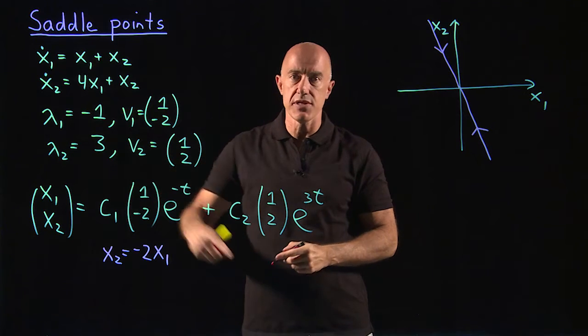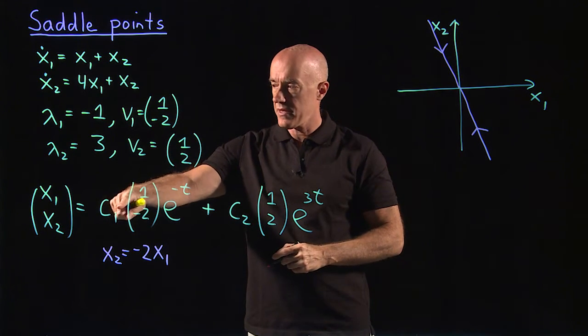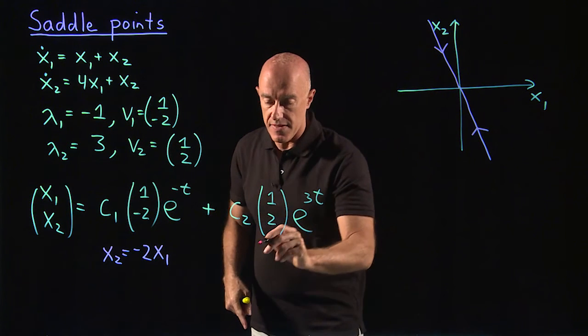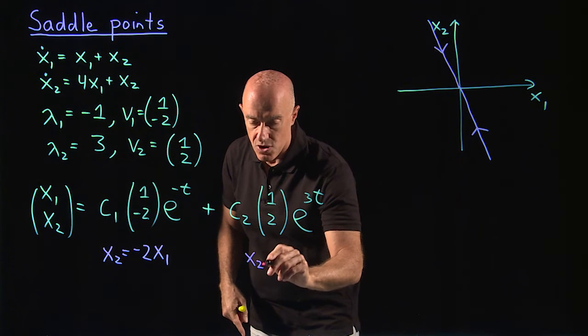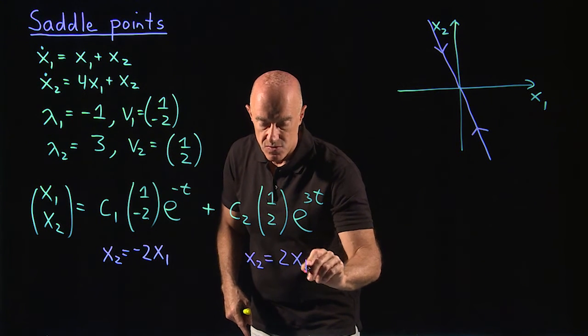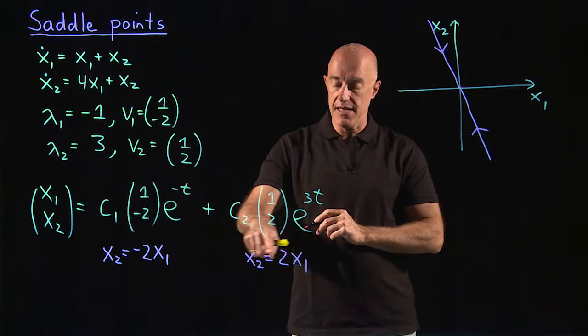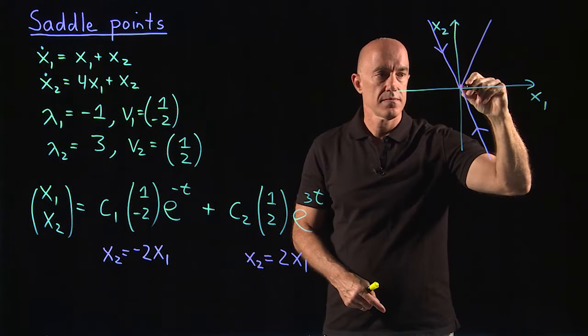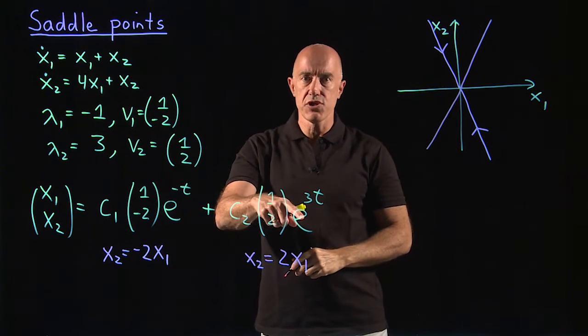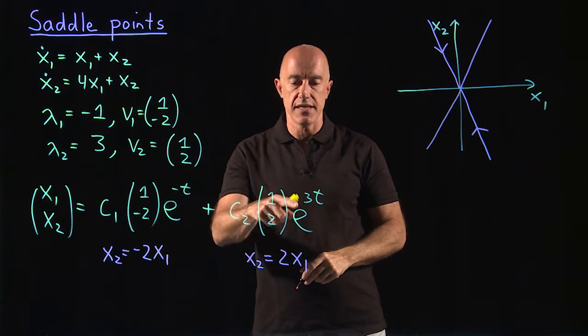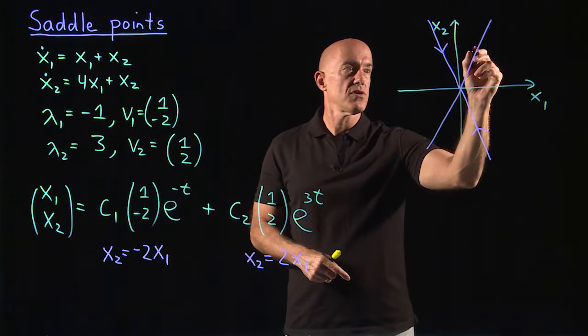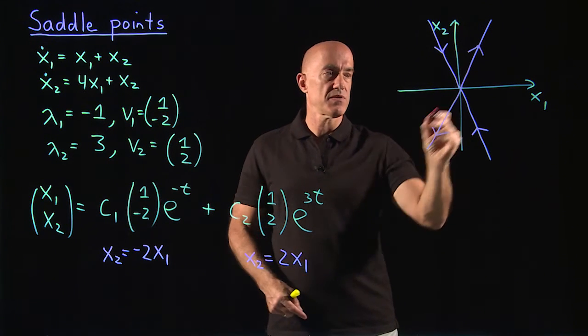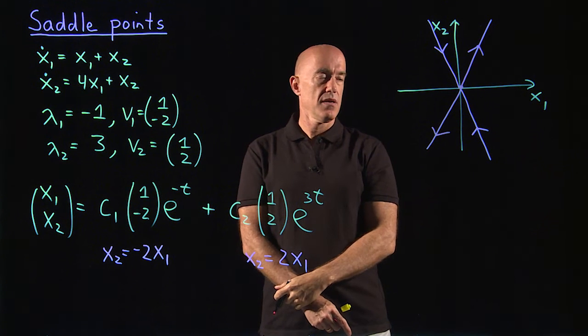If the initial conditions are such that c1 equals 0, then x1, x2 are following 1, 2. And here then x2 is always going to be twice x1. That's a line of slope plus 2. So it looks something like this. And here the solution is growing exponentially as e to the 3t. So the solution is growing away from the fixed point. This is the fixed point.